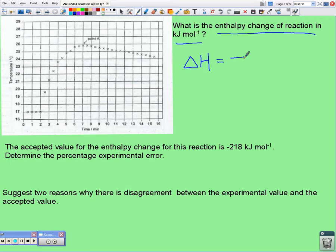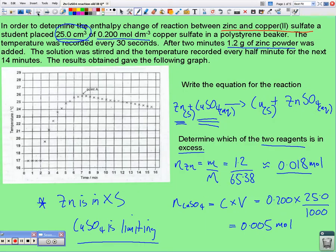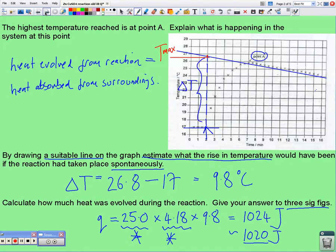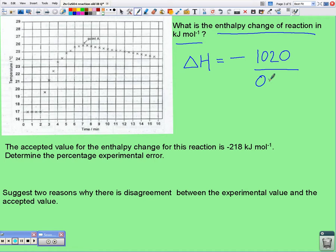We know that the energy involved was 1020 joules. And, going way back to the start, if you remember, it was the copper sulfate that was limiting. And there was 0.005 moles of the copper sulfate. So, that's what we should be dividing here.